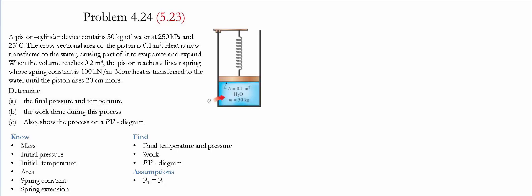Problem 4.24 or 5.23 for the given textbooks — for details please see the description below. A piston-ceiling device contains 50 kilograms of water at 250 kilopascals and 25 Celsius. The cross-sectional area of the piston is 0.1 meters squared. Heat is transferred to the water causing part of the water to evaporate and expand until the volume reaches 0.2 meter cubed. The piston then reaches a linear spring whose spring constant is 100 kilonewtons per meter. More heat is transferred until the piston rises 20 centimeters more. We need to determine the final pressure and temperature, the work done during the process, and show the entire process on a PV diagram.